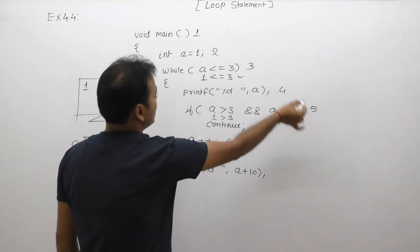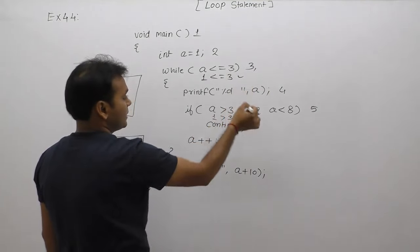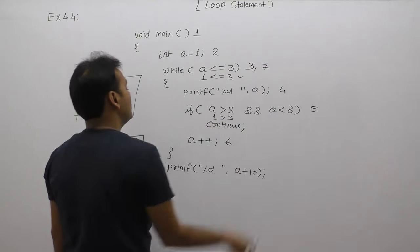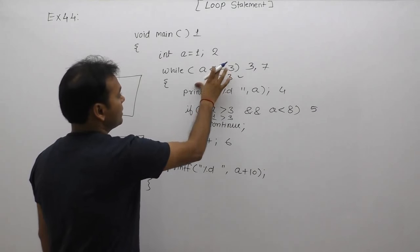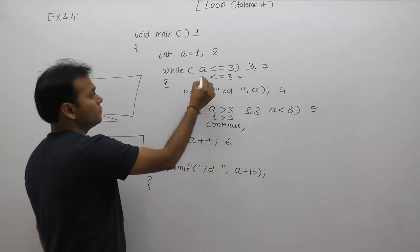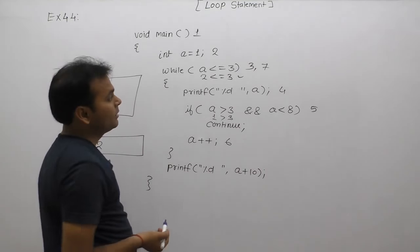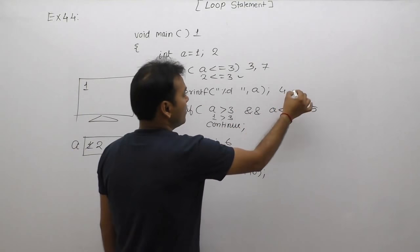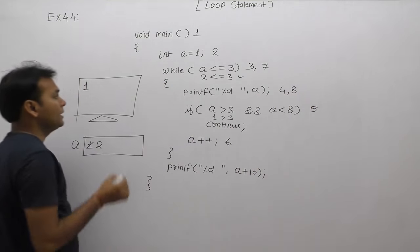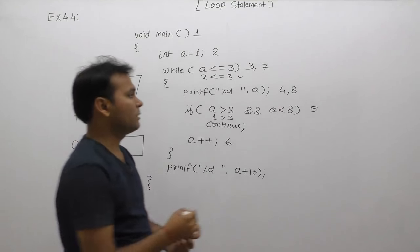Seventh case: again condition test. We replace current value as 2. 2 less than equals to 3, condition is true. Again, next time condition provides the chance. Again, body of while, printf, current value 2, current value 2 displayed.